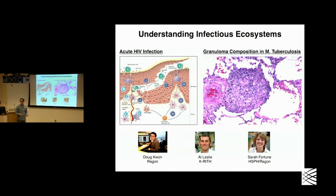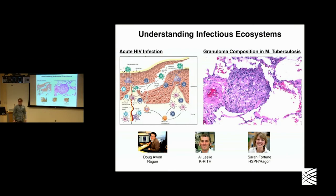We also have a facility at the Ragon Institute, and at the Ragon we were getting all sorts of cool clinical samples. We were working with Doug Vaughan, who was telling us about Cytobrush samples where they're able to look at the earliest events in HIV risk or HIV infection at mucosal tissues. But they didn't exactly know what to do with these samples because often there are so few cells. We were also talking with Al Leslie at Kayrith in South Africa and Sarah Fortune at the Ragon, and we wanted to profile granuloma samples.